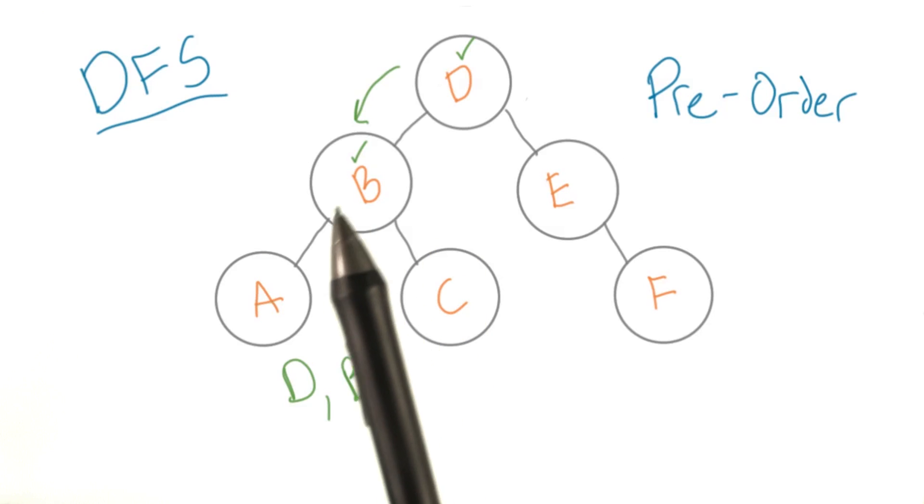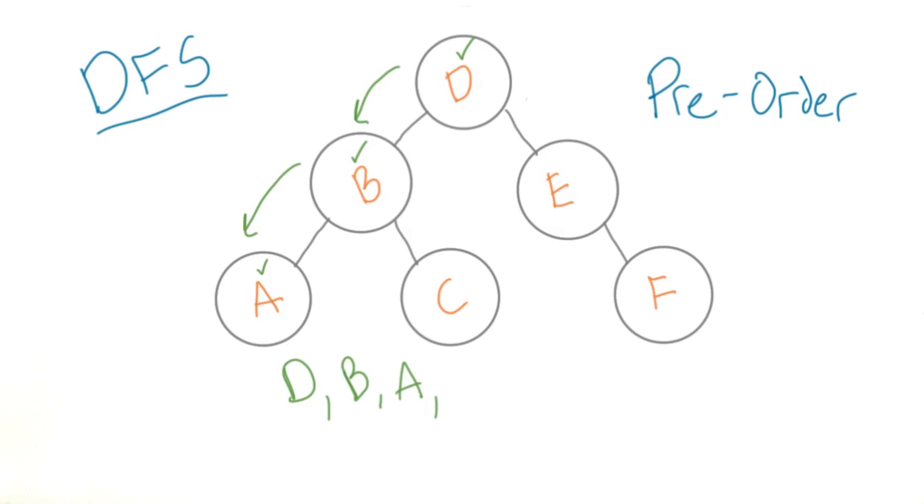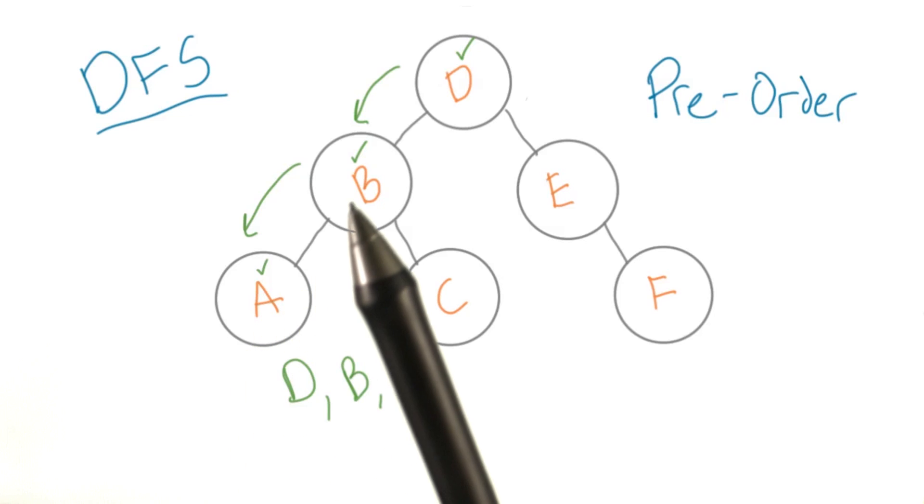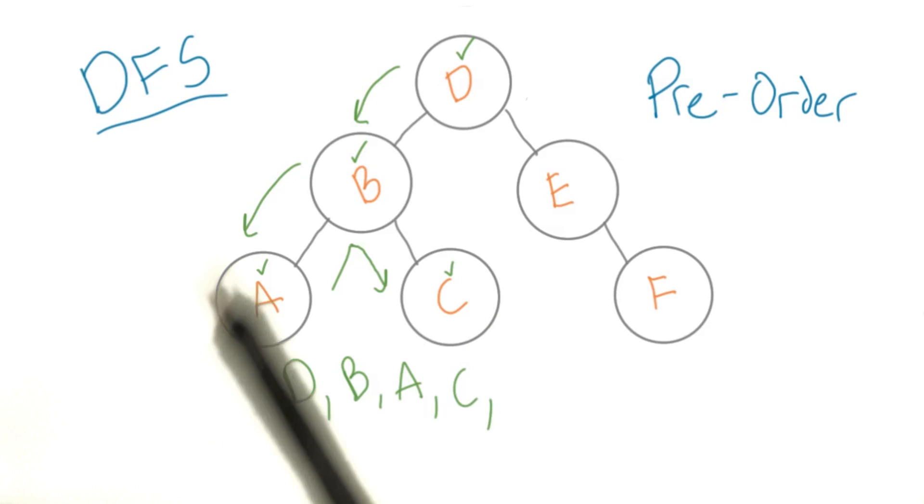Next, we pick one of the children, normally the left one by convention, and check it off too. We would continue traversing down the leftmost nodes until we hit a leaf. We check off the leaf and from there go back up to the parent. Now we can traverse to the right child and check it off too. We're done with this subtree,